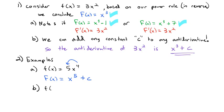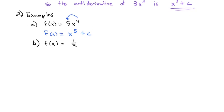Let's say f of x equals 1 over x. We recognize 1 over x as the derivative of one of our special functions: 1 over x is the derivative of the natural log of x. So the anti-derivative must be the natural log of x plus any constant.